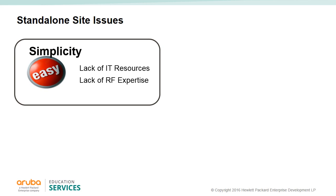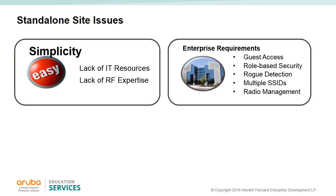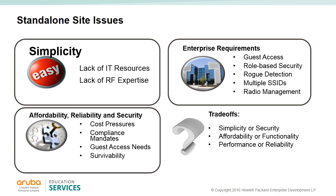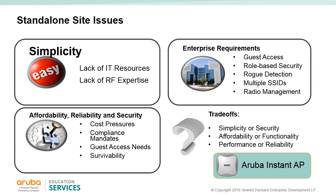Smaller distributed organizations that require Wi-Fi access are often faced with many challenges. They require simplicity since they often lack IT resources or RF knowledge. They have requirements like multiple SSIDs, guest access, firewalls, intrusion detection, and radio management. These are all functions of a high-end enterprise class network, but small organizations are constrained by cost or compliance mandates, forcing them to choose between cheap consumer-grade Wi-Fi gear, feature-rich but costly high-end wireless LANs, or doing without wireless altogether. Aruba Instant APs were created to solve these issues.